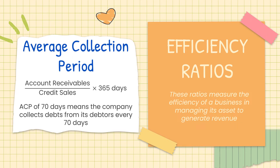The second ratio under efficiency is the average collection period (ACP), which measures how long it takes for a company to collect debts from its debtors. The higher the ACP, the longer it takes to collect; the shorter the ACP, the faster debts are collected. Our aim is to keep ACP as low as possible. The formula is: account receivable divided by credit sales, multiplied by 365 days. For example, an ACP of 70 days means the company takes 70 days to collect debts from its debtors.